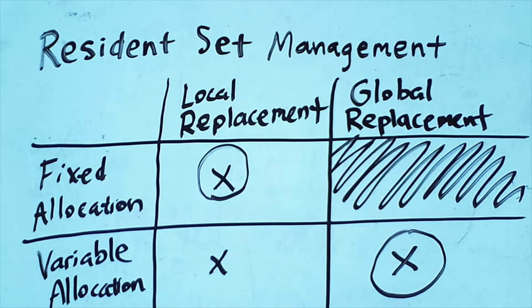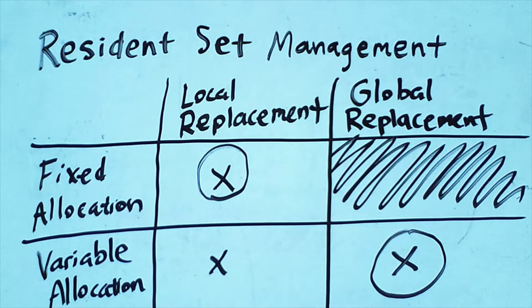Where the set of frames is simply the entire set of frames in memory, and whenever a page fault occurs we can replace a frame associated with any process.